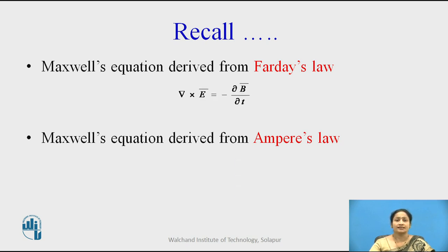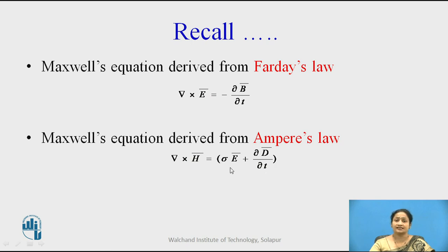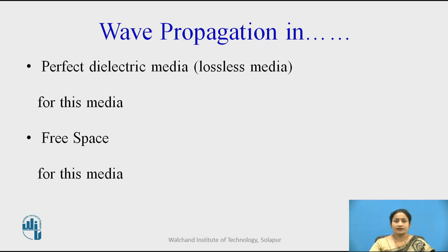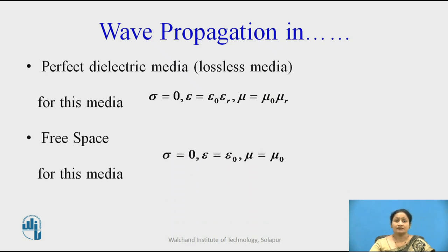The Maxwell's equation derived from Faraday's law is given by: del cross E-bar is equal to minus ∂B/∂t. And Maxwell's equation derived from Ampere's law is: del cross H-bar is equal to sigma E-bar plus ∂D/∂t. Before deriving the wave equations, we consider assumptions: for perfect dielectric media, sigma is equal to 0, and epsilon and mu values are as given. The same applies for free space, where sigma is equal to 0, while the values for mu and epsilon change.